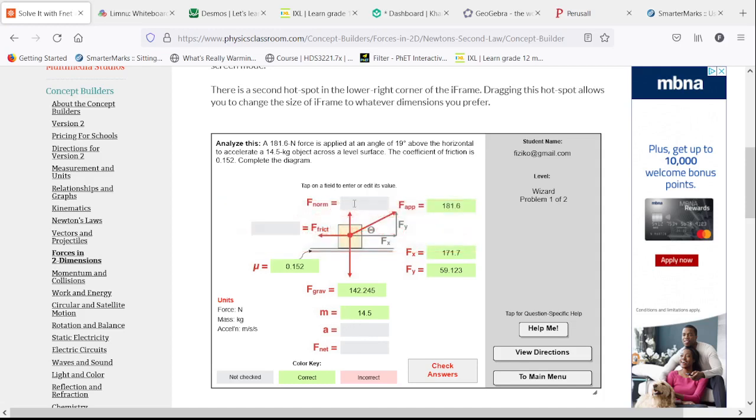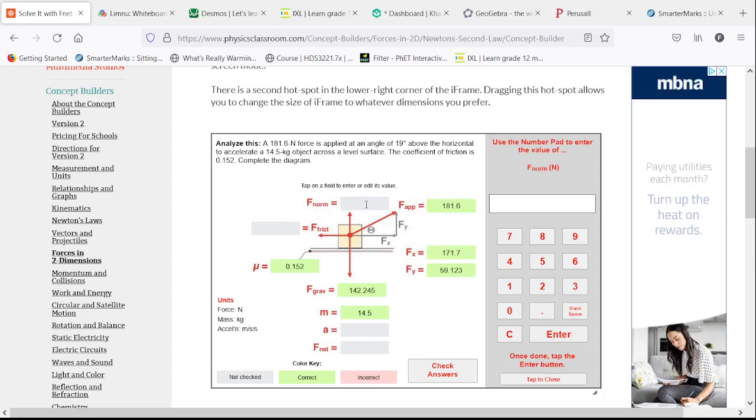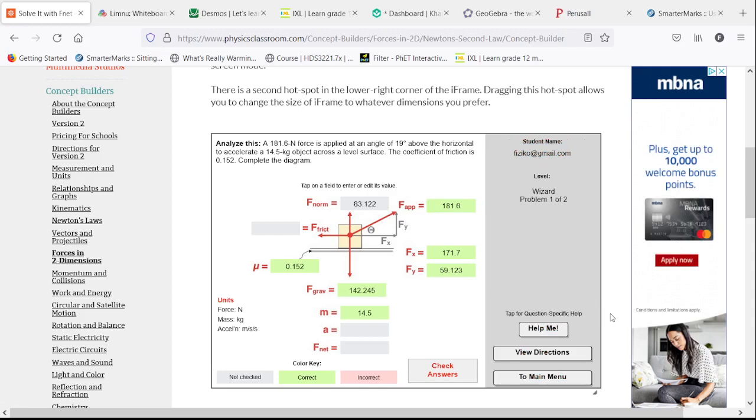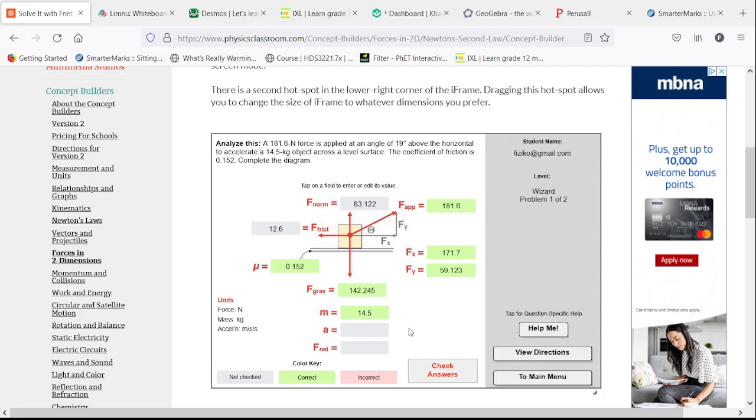We must do the normal force next because the force of friction is the coefficient of friction times the normal force. The normal force is the force of gravity minus the vertical component of our applied force, so it's 83.1. We multiply that by 0.152, which is our coefficient of friction, and that gives us a frictional force of 12.6 Newtons.